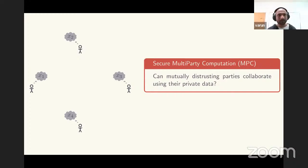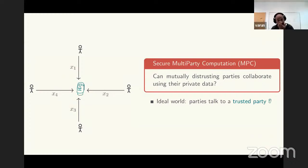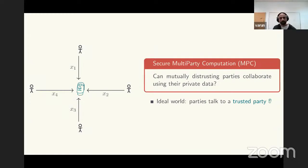Consider the following situation: there is a set of parties, all with private inputs x1, x2, and so on. They all want to compute some pre-agreed functions that depend on all these inputs, and this needs to be done without any party revealing their input to the rest. If they all can agree on a trusted party, there is a simple protocol: all parties privately communicate their inputs to this trusted party.